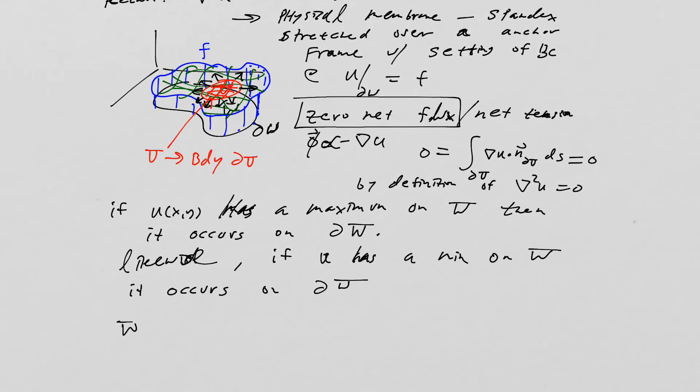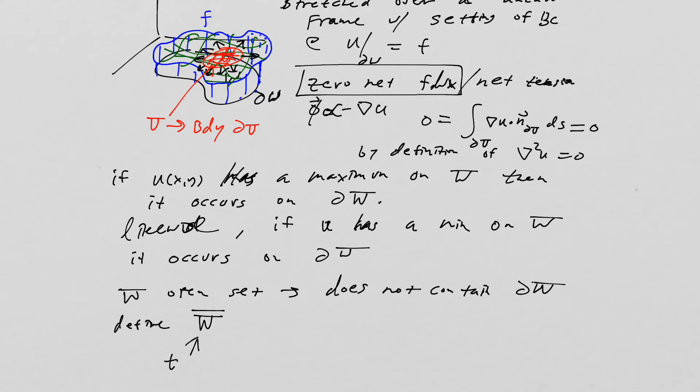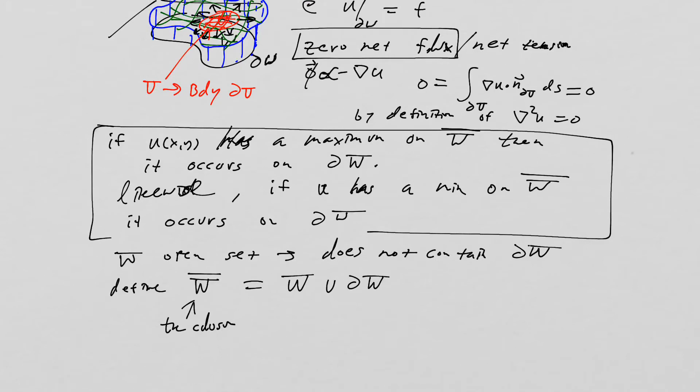One thing is typically we say W is an open set, and so it does not contain the boundary itself. So one thing we can actually define is the closure. That's simply just the open set unioned with the boundary. So I'm going to rephrase this statement slightly by using that closure statement. This technicality says that the maximum and minimum will always be on the boundary, and this makes sense.